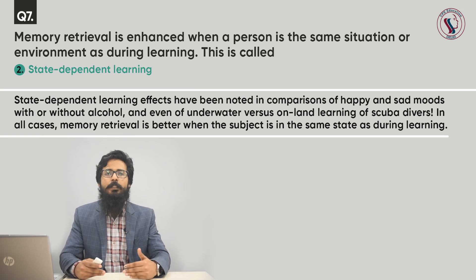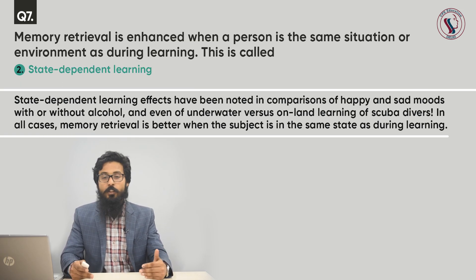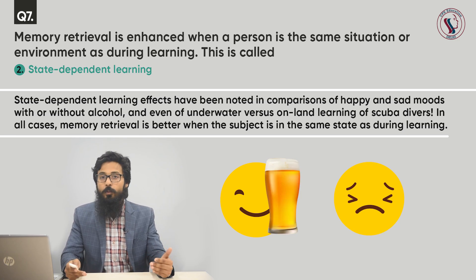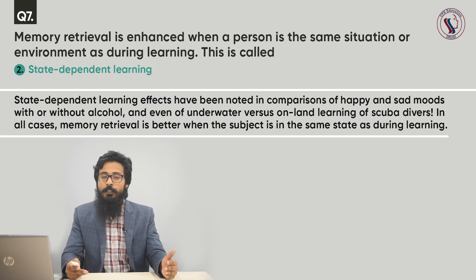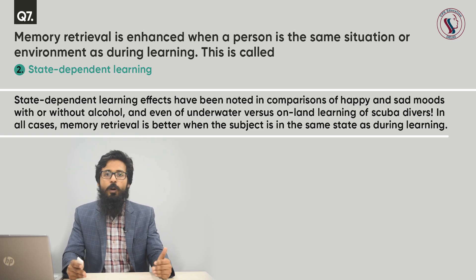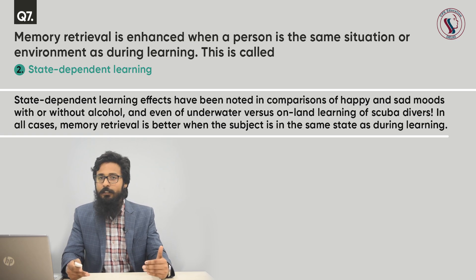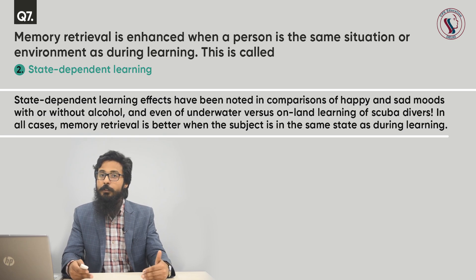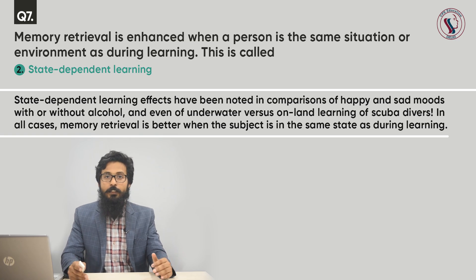State-dependent learning effects have been noted in comparisons of happy and sad mood, with or without alcohol, and even underwater versus on-land learning of a scuba diver. The concept is: when we learn certain information in a certain situation, the chances are high to recall that information in the same situation. For example, if you learn something when you were drunk, the probability is high that you will recall that information again when you consume alcohol in the future.